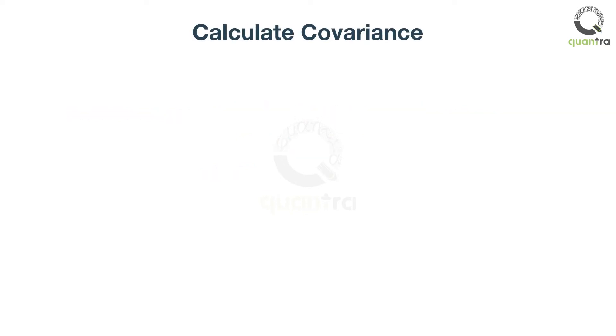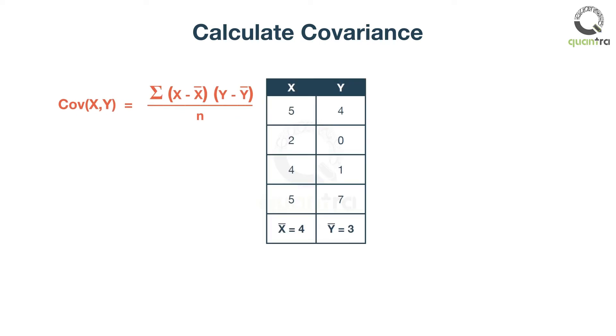Now, let us understand how to calculate covariance. Mathematically, it is calculated using the formula shown. For example, let us take two series of data, X and Y.